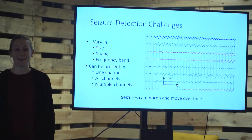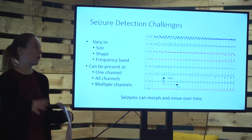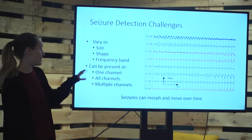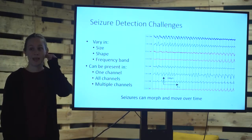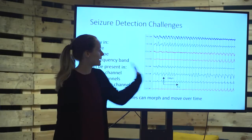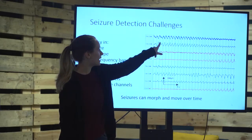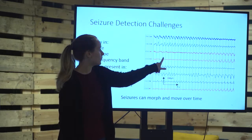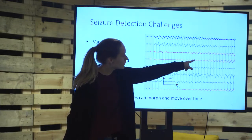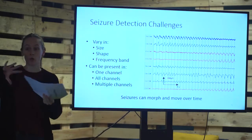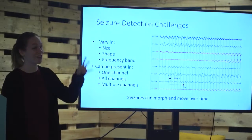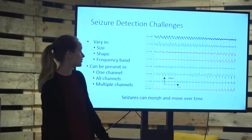The challenges of seizure detection are that seizures can vary in size — large or small amplitude — vary in shape, vary in the frequency they dominate, and can appear in one channel, all channels, or multiple channels. Here's an interesting example of temporal evolution: at the beginning, there's a seizure on one half of the brain — the blue signals — with nothing on the red side. But over time, the seizure morphs and moves into the other side of the brain. It's hard to define a clear definition of what a seizure is when it can change its characteristics over time.